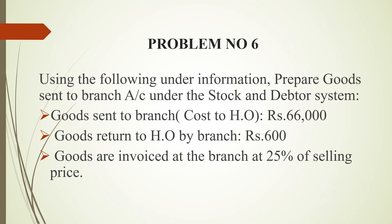But if you want to record goods sent to head office by branch, you can't mention anything there. For goods sent to branch account, you can keep your invoice price at 25% of selling price. If you want to maintain your invoice price, you can keep it at cost price. We can open the goods sent to branch account.